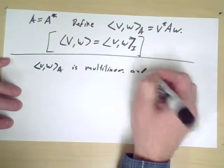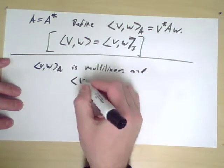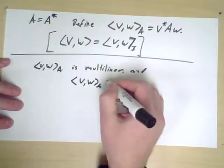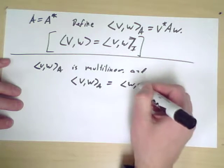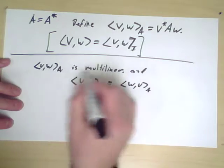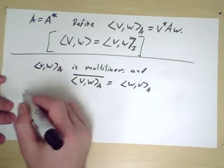And it satisfies this key property that V W A is W V A up to conjugation. Here's a quick proof of that.